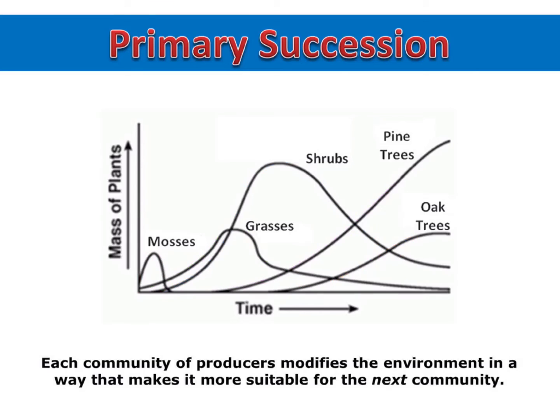Notice that at the end of primary succession, the total biomass is much greater than at the beginning. There are also pine trees, oak trees, shrubs, and grasses, showing that the biodiversity also greatly increased.